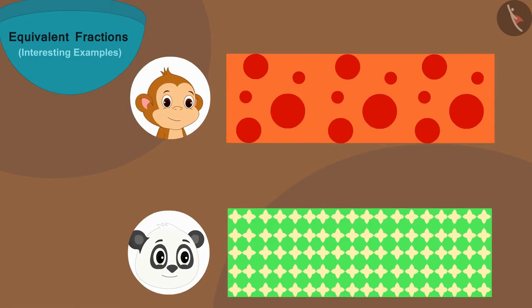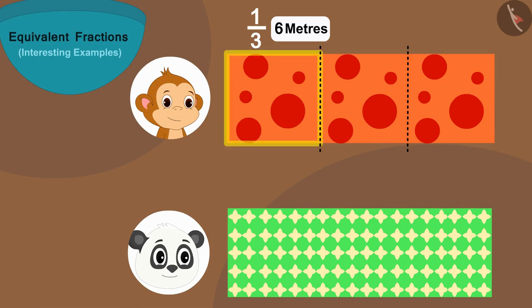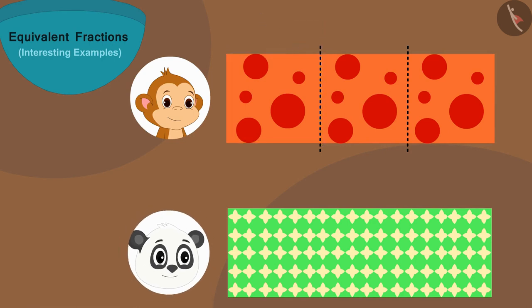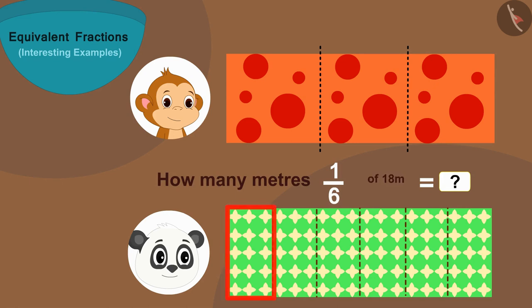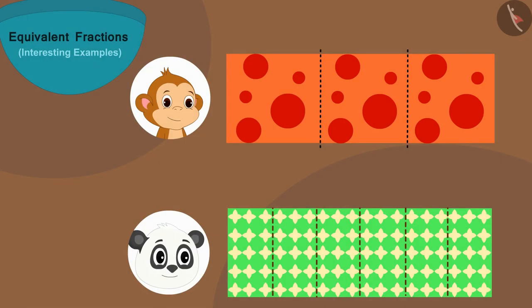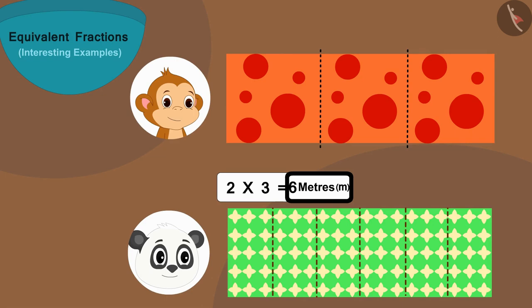Does this mean one-third part of Babban's cloth and two-sixth part of Golu's cloth are equal? Let's look at it another way. We saw that one-third part of Babban's cloth is six metres long. The length of Golu's cloth is also 18 metres, and he has made six equal parts. So how many metres will one part be — or how many metres is one-sixth of 18 metres? Three metres. But Golu has given two-sixth part to Babban — that is, two parts out of six.